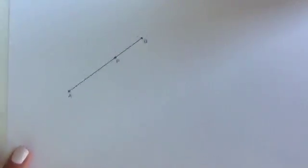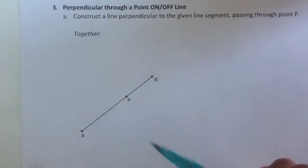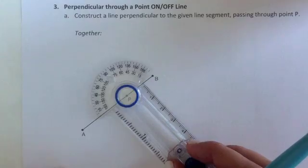We're going to start where point P is on the line, and you can see that P is not in the middle of segment AB. Our first step is to create two brand new endpoints. I'm going to start with my center on P.